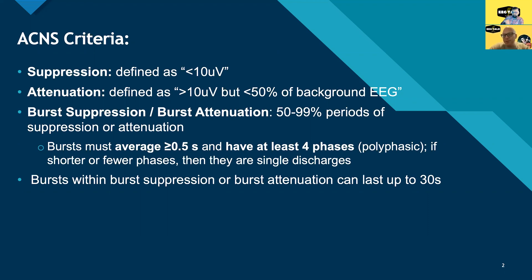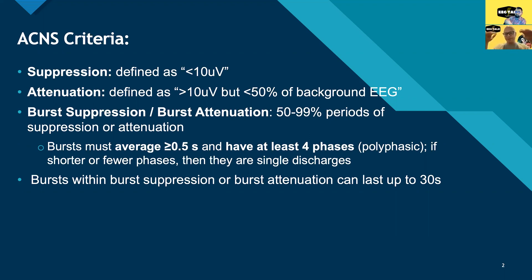So first, suppression. When we say the EEG shows suppression, we mean the voltage is less than 10 microvolts. For suppression and attenuation, we're talking about things that happen intermittently, typically — a period when it's less than 10 microvolts, and then it goes back above — that's a suppression.